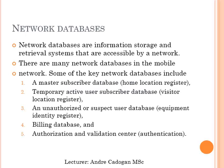Let's switch to network databases. There are several types. The home location register, HLR, is the master subscriber database — typically one per network. The visitor location register, VLR, is a temporary active user subscriber database that determines whether a user of a mobile phone is in a particular location. There is also an unauthorized or suspected user database — the equipment identity register — for those using SIM cards not belonging to them, and a billing database in terms of the authentication, authorization, and validation center.